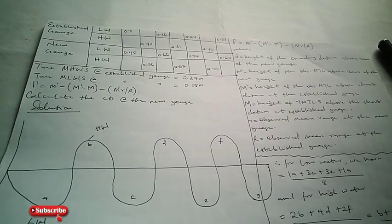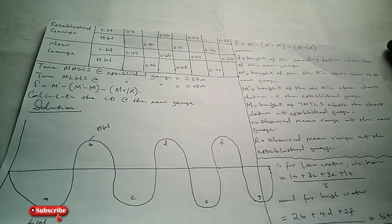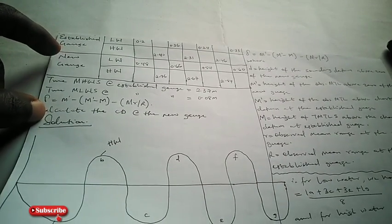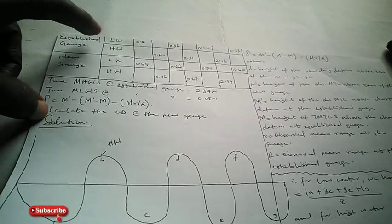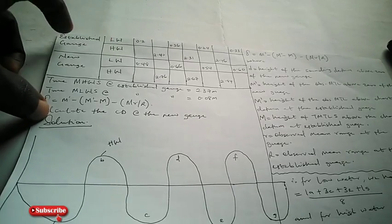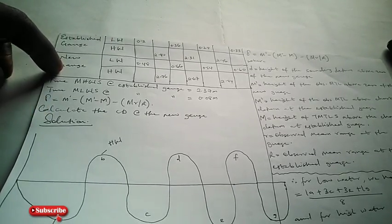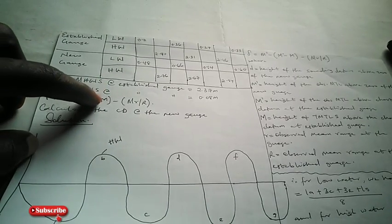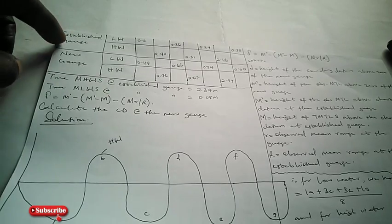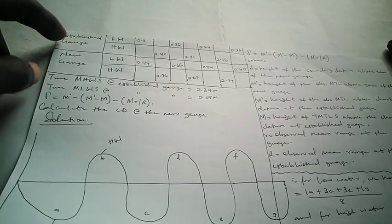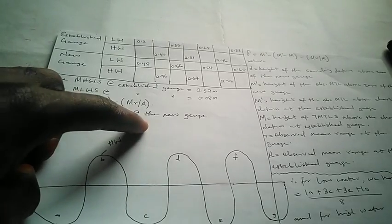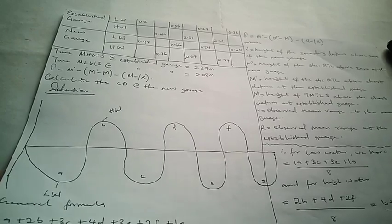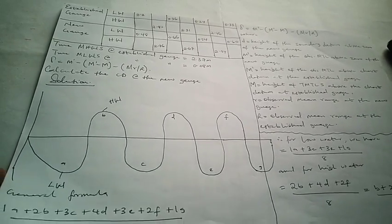So now let's look at the question before us. We have a table here for the observations on the established gauge and the new gauge. We have the low water and the high water for both gauges. They also give us the true mean high water spring and the true mean low water spring at the established gauge. They ask us to calculate the chart datum at the new gauge.